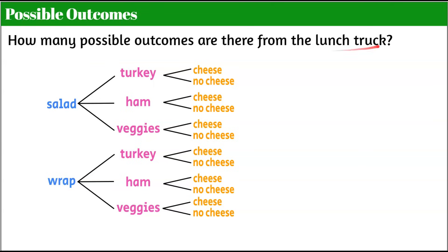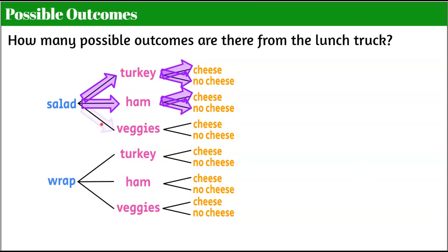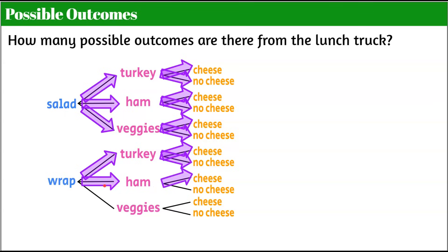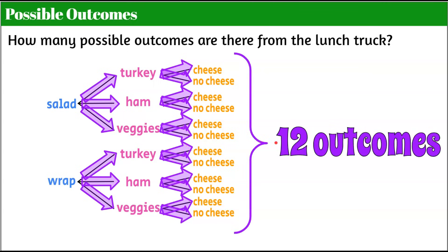How many possible outcomes are there from the lunch truck? How many days could you visit this lunch truck and each time have picked a different combination? We follow all the branches: salad-turkey-cheese, salad-turkey-no cheese, salad-ham-cheese, salad-ham-no cheese, salad-veggies-cheese, salad-veggies-no cheese, wrap-turkey-cheese, wrap-turkey-no cheese, wrap-ham-cheese, wrap-ham-no cheese, wrap-veggies-cheese, wrap-veggies-no cheese. So we can see that we have 12 outcomes.